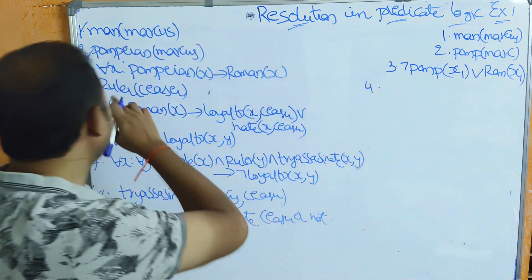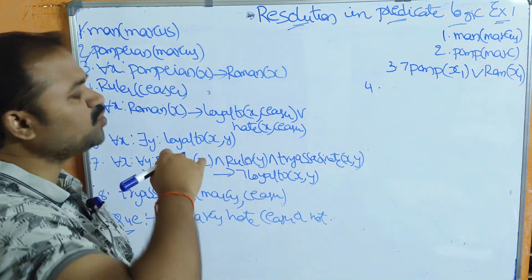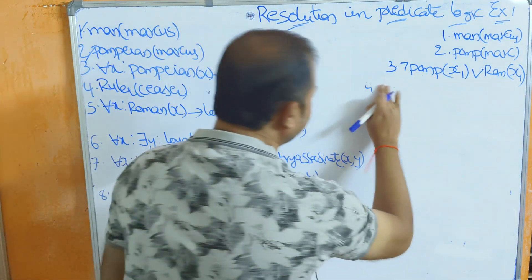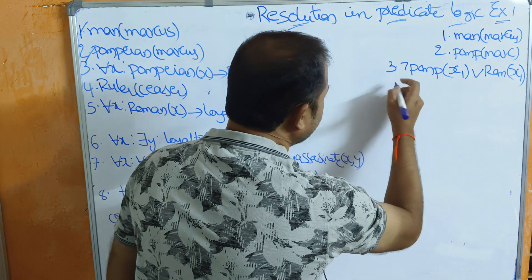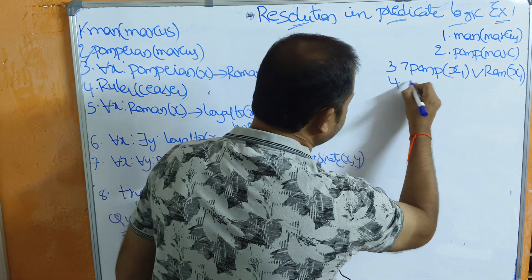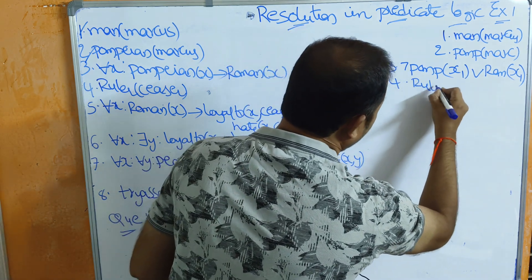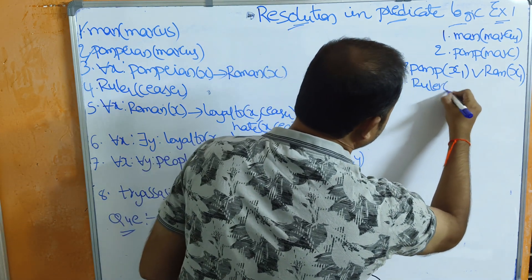The fourth statement is ruler(caesar). There is no difference in clause form — the statement remains ruler(caesar) only.